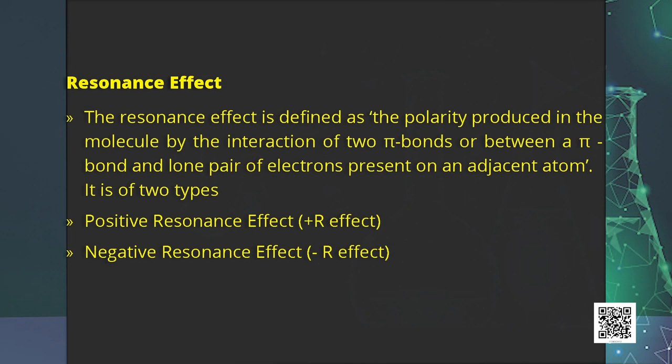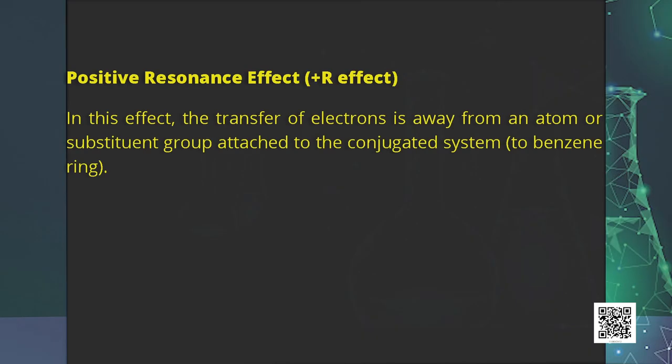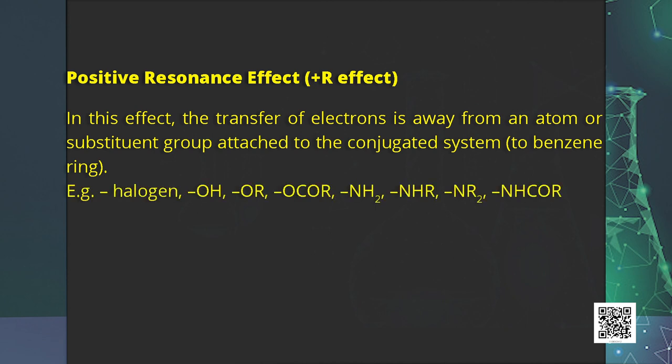There are two types of resonance effect: positive and negative. In the positive resonance effect, electrons are transferred away from a substituent group into the conjugated system. Groups showing positive resonance effect include halo, hydroxyl, alkoxy, and amino groups. This effect is observed in compounds like phenol and aniline.